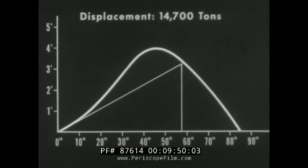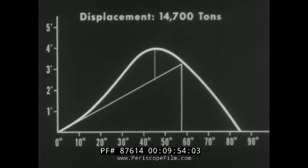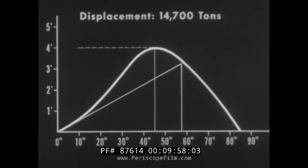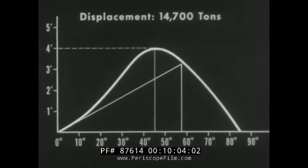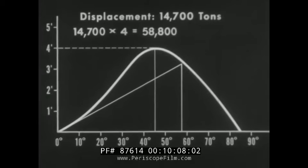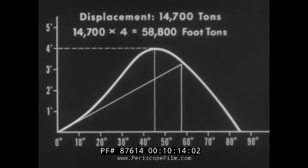The maximum arm in this condition of loading occurs at approximately the same angle, 45 degrees, but has been reduced to four feet. The maximum righting moment for the medium load condition is 58,800 foot-tons, as against 71,000 foot-tons in the full load condition. Stability has been decreased, but still is adequate.